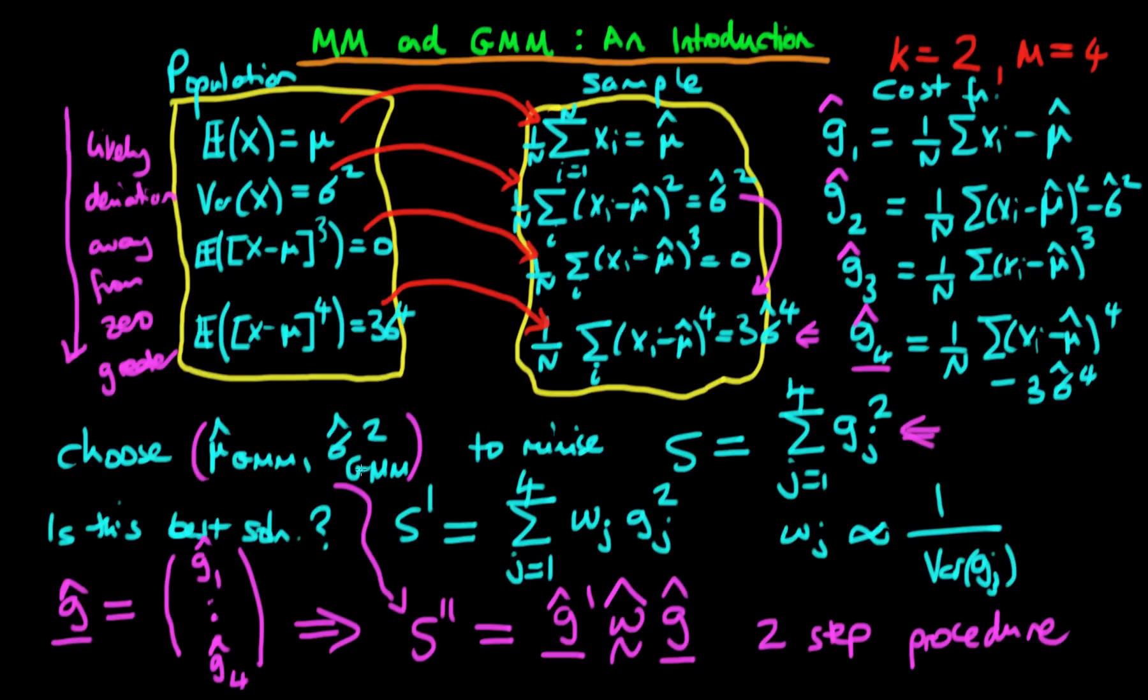In the first step we estimate each of these cost functions after we've found mu hat and sigma squared hat to minimize just a simple least squares criteria.